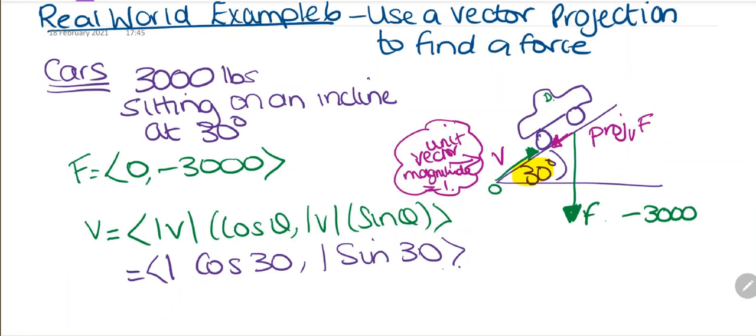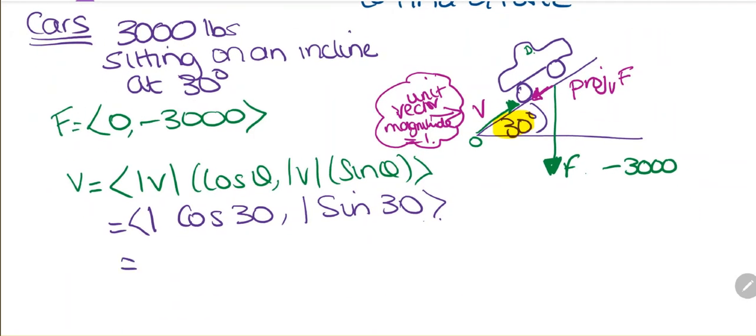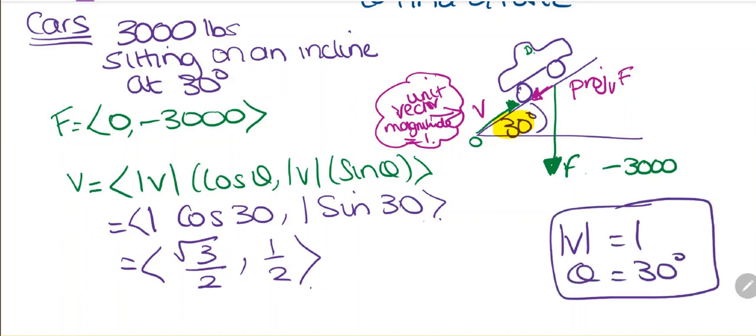If we simplify this and work it out, cosine of 30, or we can use the unit circle, is √3/2. And sine of 30 is 1/2. We're multiplying that by 1. So the unit vector is 1 and the angle is 30.